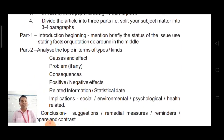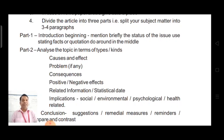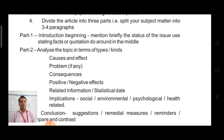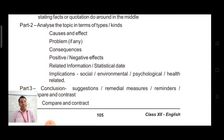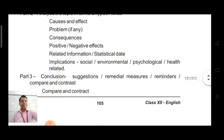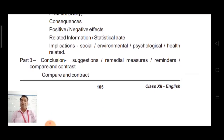Divide the article into three to four paragraphs. Paragraph 1 is the introductory beginning — briefly mention the status of the issue, use stating facts or a quotation. Paragraph 2: analyze the topic in terms of types, kinds, cause and effect, problem if any, consequences, positive or negative effects, related information, statistical data, implications — social, environmental, psychological, and health-related.